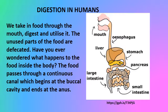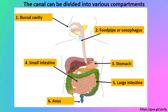Digestion in humans: we take in food through the mouth, digest and utilize it, and the unused part of the food is defecated. The food passes through a continuous canal which begins at the buccal cavity and ends at the anus. This canal is divided into various compartments: the buccal cavity, food pipe, stomach, small intestine, large intestine, rectum, and anus.